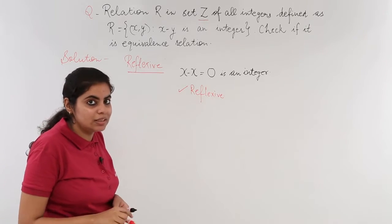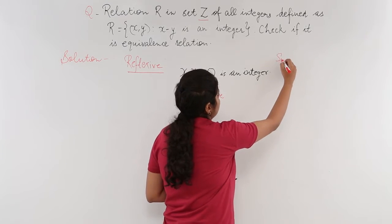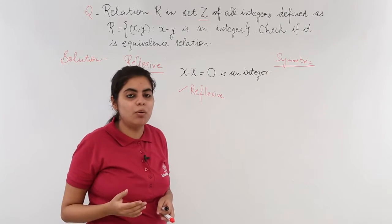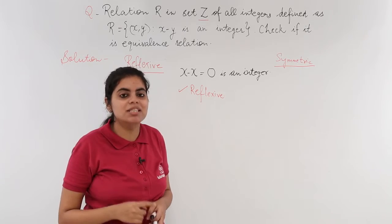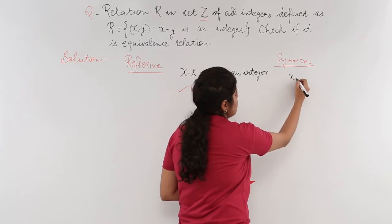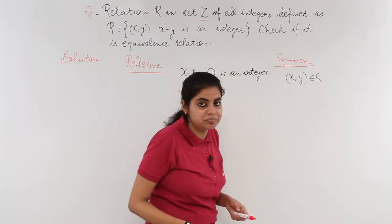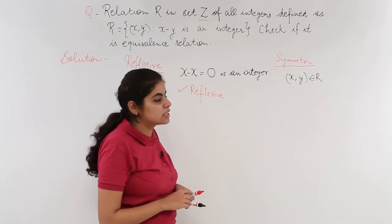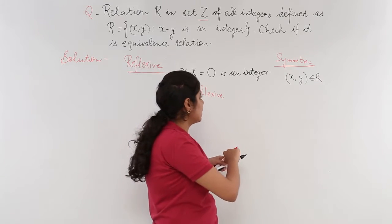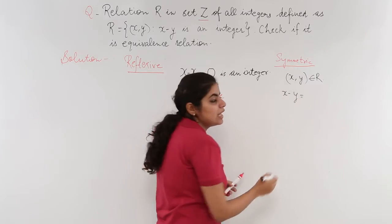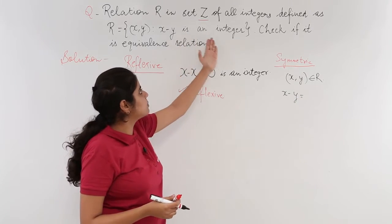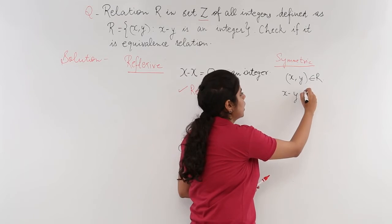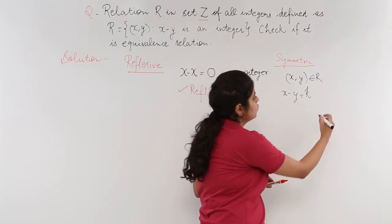Now let's check under the heading 'Symmetric'. We have X comma Y belonging to relation R, meaning X minus Y is an integer. For simplification, I write X minus Y equals K, where K is some integer. Now let's see whether Y comma X also belongs to R.